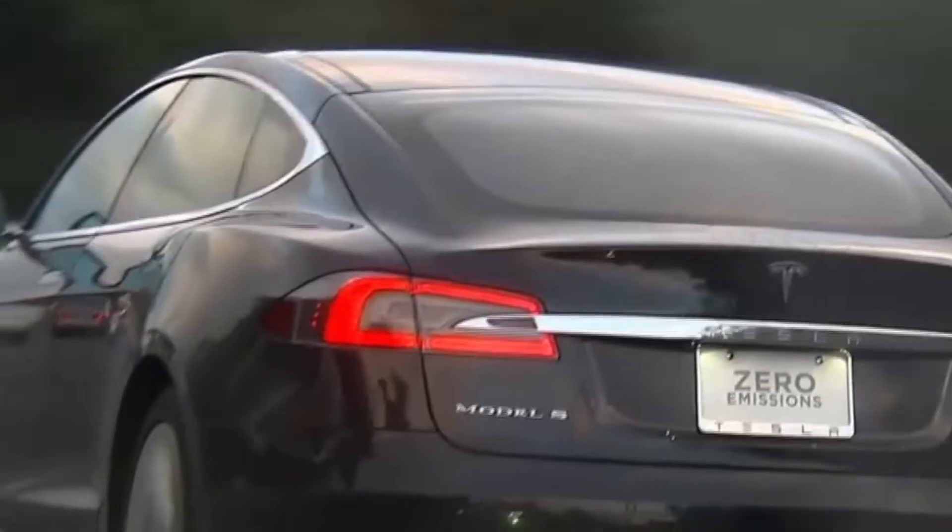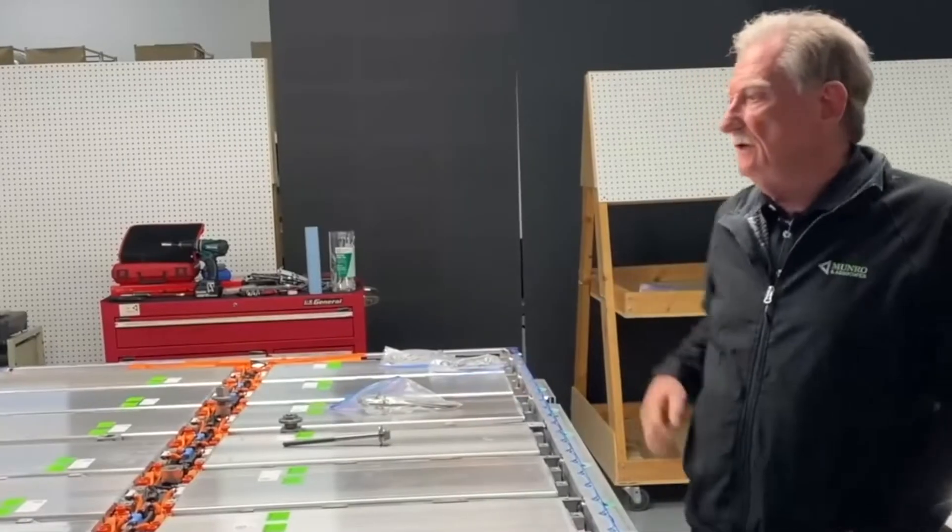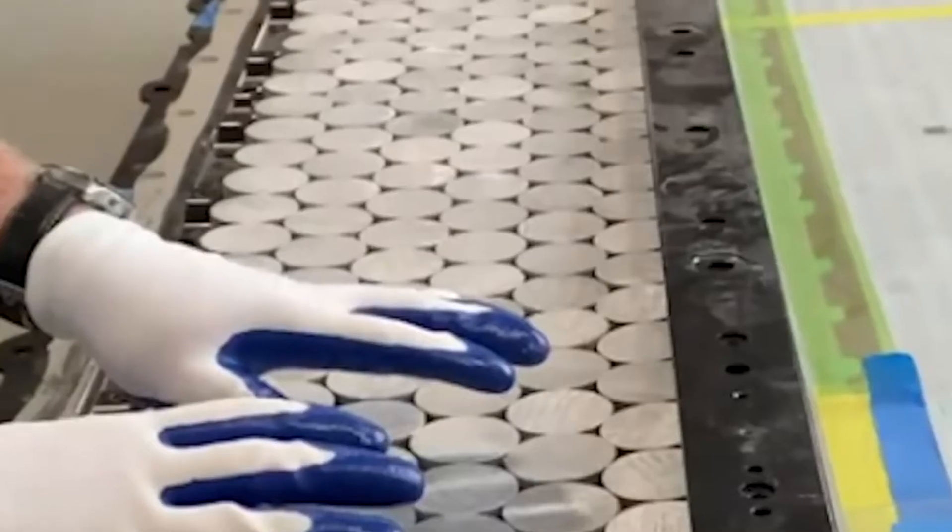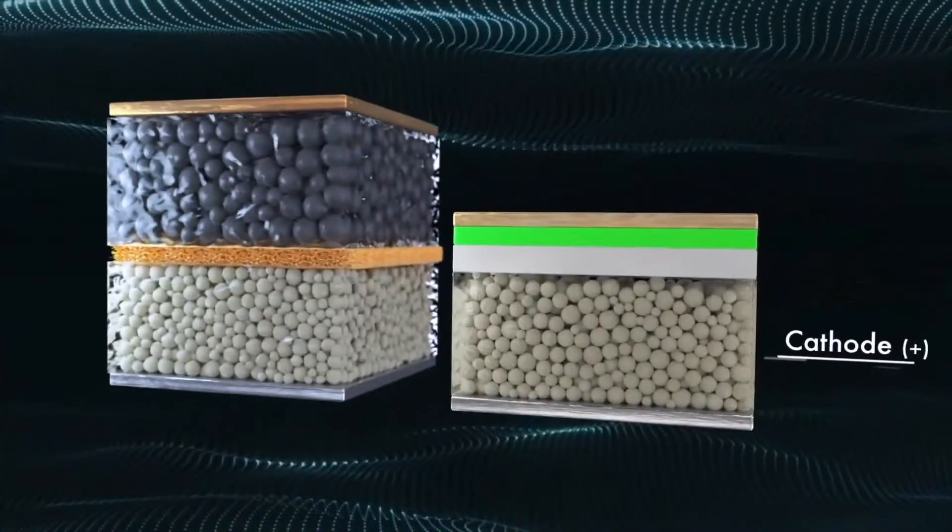So in Texas, we're building the Model Ys with the structural battery packs and the 4680 cells, and we'll start delivering after final certification of the vehicles, which should be fairly soon, Musk said through Teslarati.